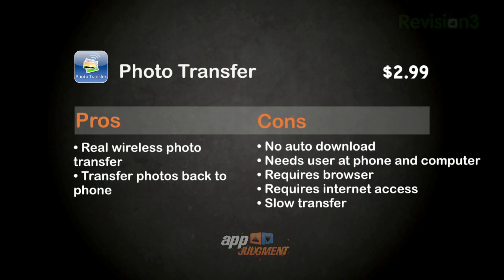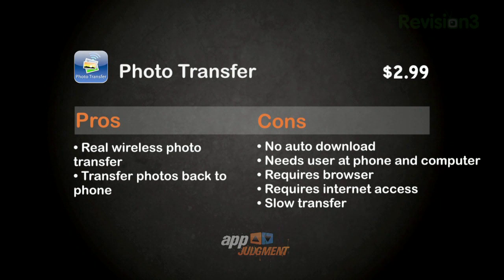Let's go over the pros: you can wirelessly transfer photos from your iPhone or iPod touch, and you can transfer photos up to your iPhone or iPod touch from a remote machine. The cons: it doesn't download automatically, it needs somebody at both ends of the transfer, it requires a web browser with internet access to receive photos, you can transfer a maximum of 50 photos at a time, and it's a lot slower than a cable.